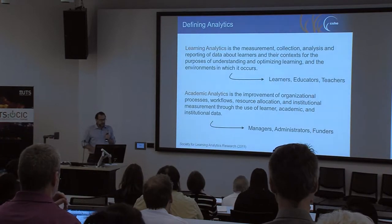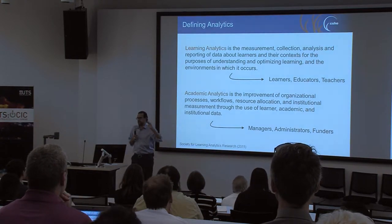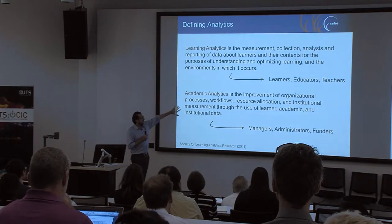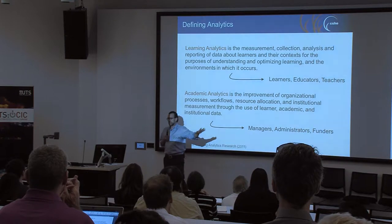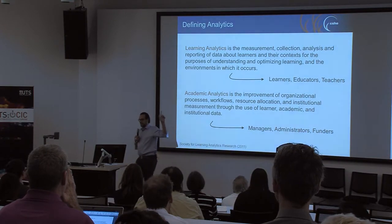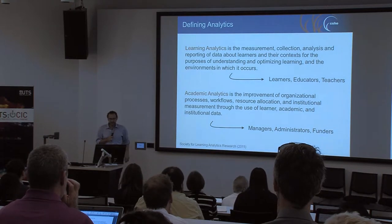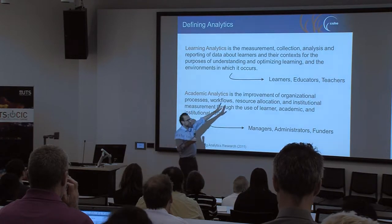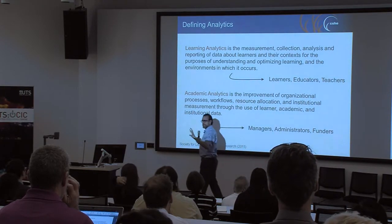The Society put together two defining characteristics, two areas of analytics definition. I like the distinction between academic analytics on the one hand — more at the organisational and institutional level, targeted at higher-level managers, administrators, and funders — and learning analytics on the other, which is more at the micro level, looking at the collection and analysis of data of learners within their context. The audience members for these are slightly different: learners, educators, and teachers at the teaching and learning level.